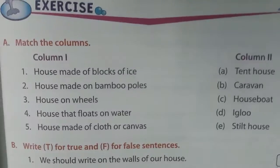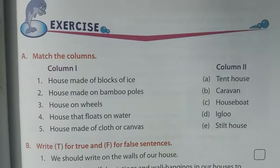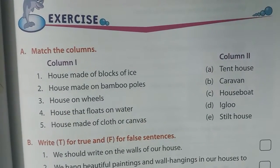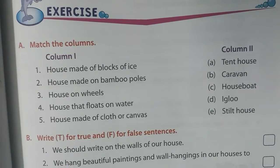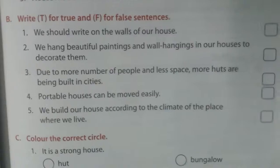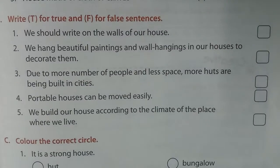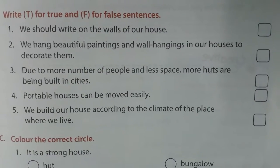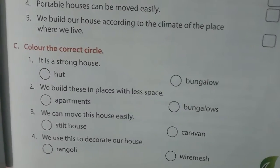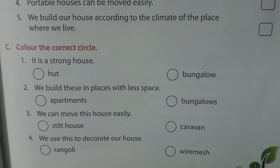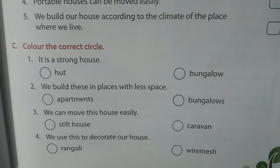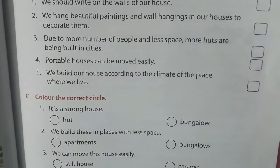For section A, the answers are: 1-a, 2-b/e, 3-b, 4-c, 5-a. For section B (True/False): false, false, true, false, true, true. For section C, circle the correct answers: bungalows, apartments, caravan, rangoli.